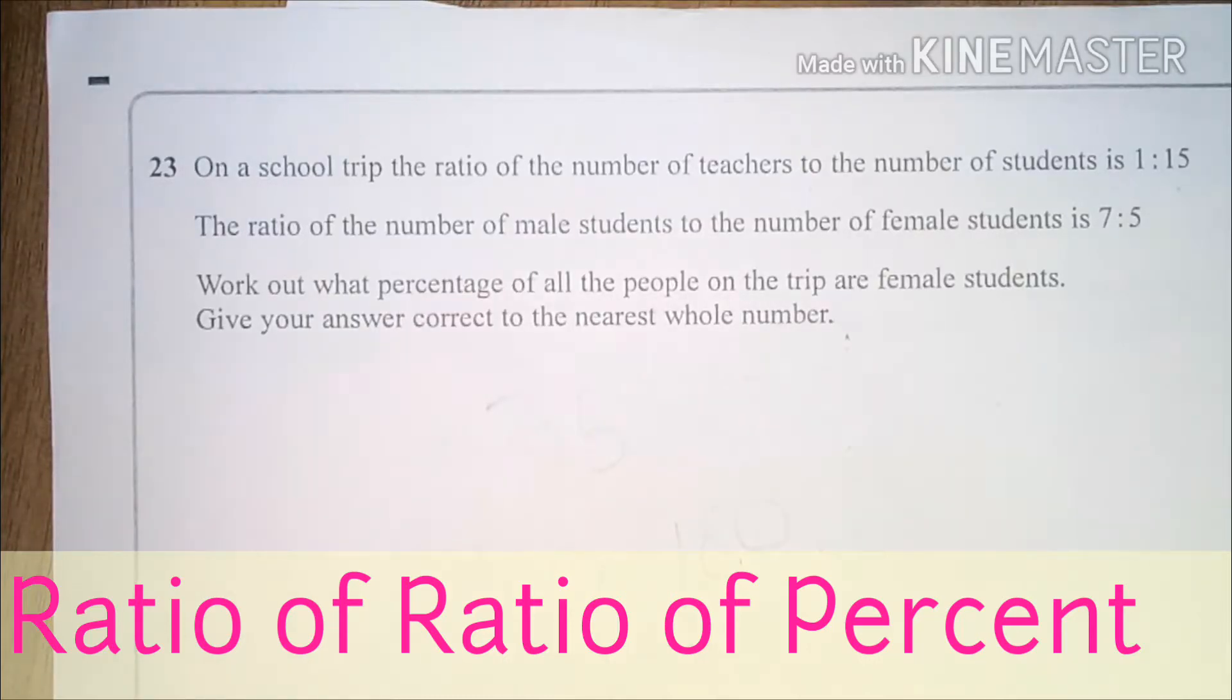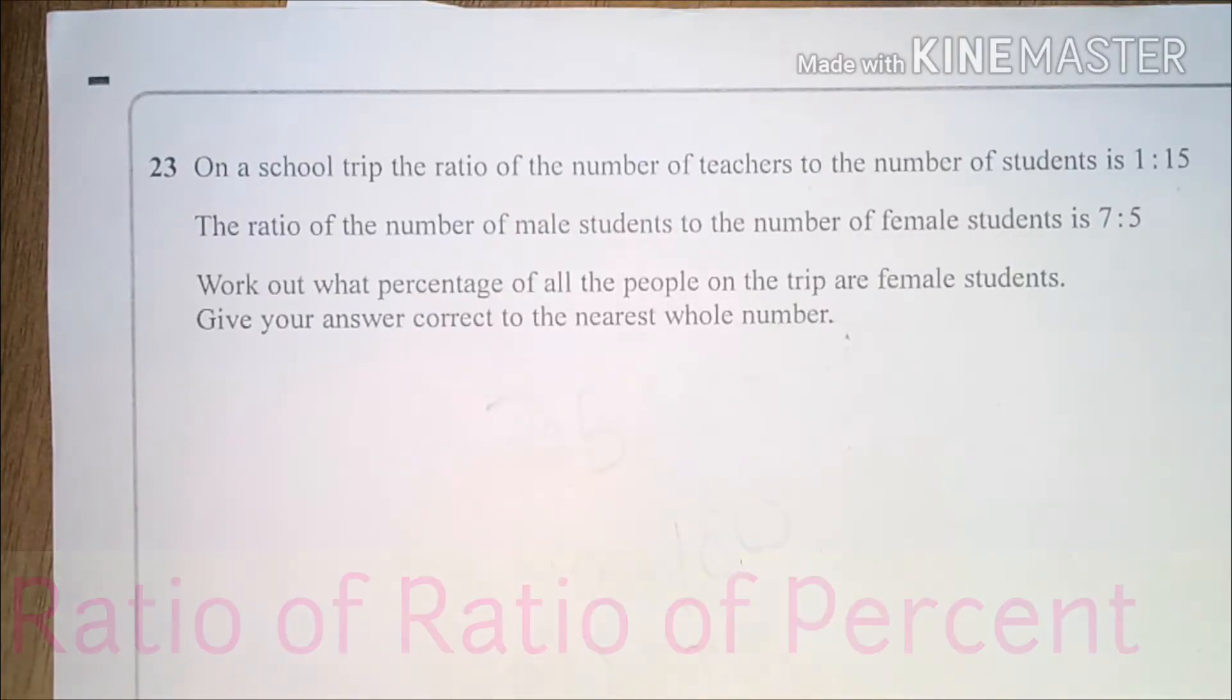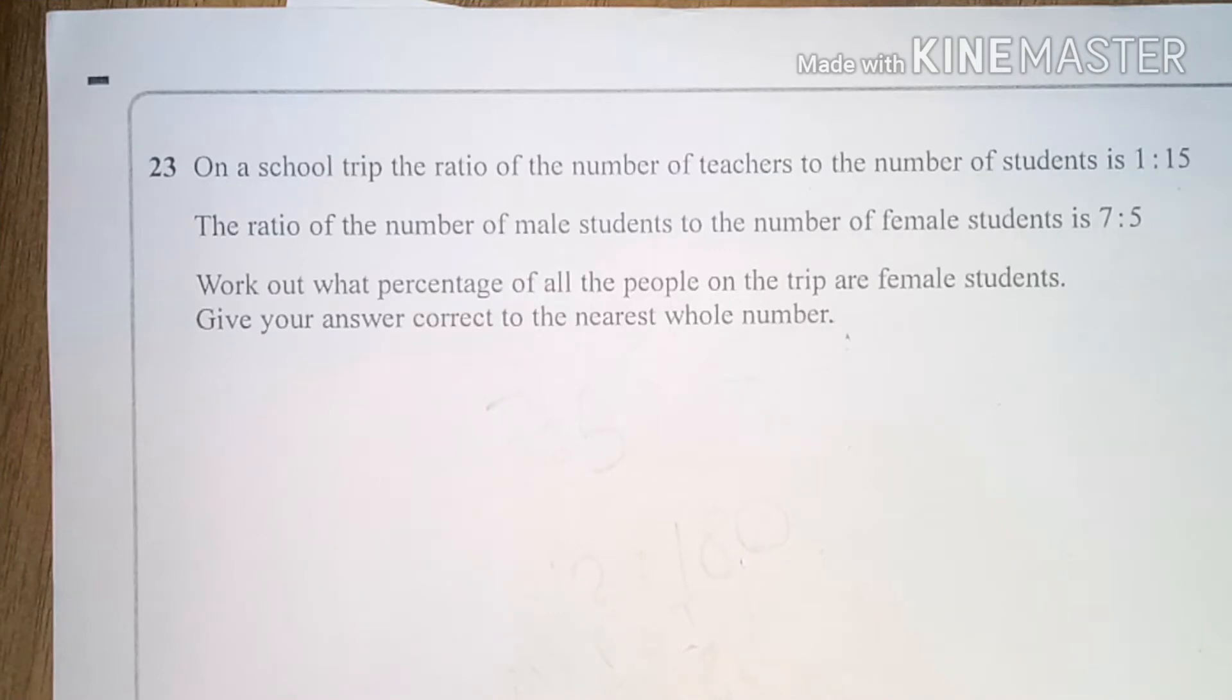It's quite a confusing question. On a school trip, the ratio of the number of teachers to students is 1 to 15. The ratio of the number of male students to the number of female students is 7 to 5. Work out what percentage of all the people on the trip are female students. Give your answer to the nearest whole number. Now it's a bit confusing because we need to